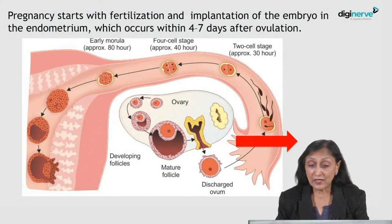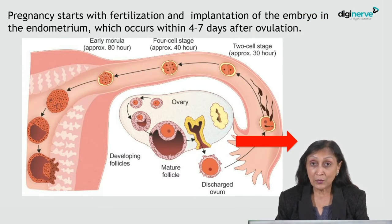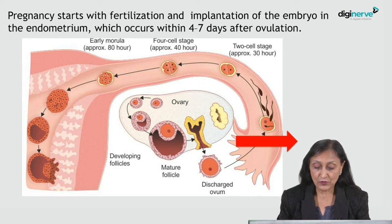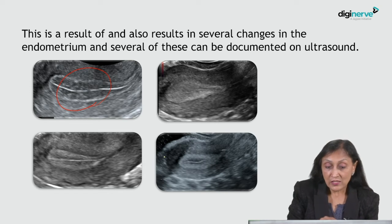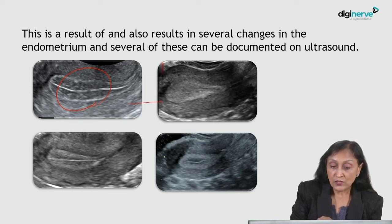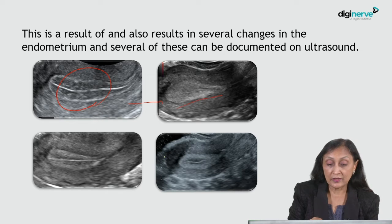Pregnancy starts with the fertilization and implantation of the embryo in the endometrium, which occurs about four to seven days after ovulation. This results in several changes in the endometrium. The pre-ovulatory endometrium is multilayered and changes into a secretory endometrium which is hyperechoic.